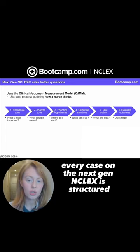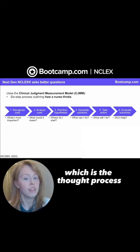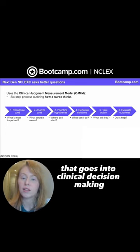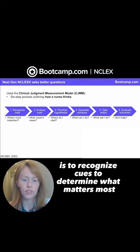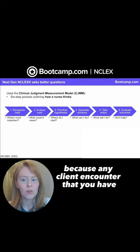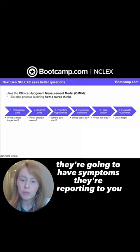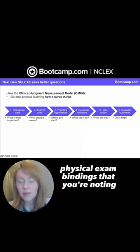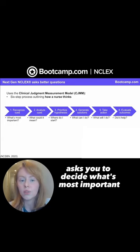Every case on the NextGen NCLEX is structured according to this clinical judgment measurement model, which is the thought process that goes into clinical decision-making. The first step in any client encounter is to recognize cues — to determine what matters most. Clients will have several things going on: symptoms they're reporting and physical exam findings you're noting. The first question in any NextGen case asks you to decide what's most important.